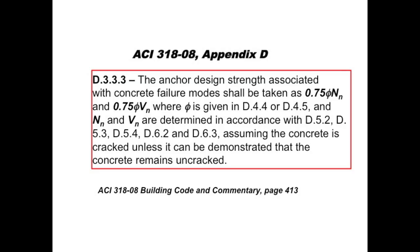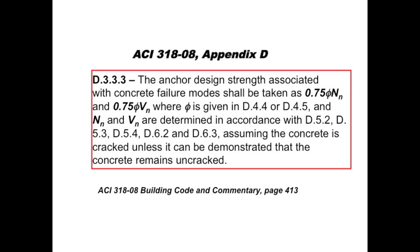Part D.3.3.3.3 states that a factor of 0.75 will be applied to design tension strengths and design shear strengths. PROFIS Anchor will apply a factor of 0.75 to all non-steel design strengths, including bond strength, when seismic design is selected as an option. The 0.75 factor will be designated by PROFIS Anchor as phi seismic. Note that phi seismic is not applied to any design steel strength; however, phi seismic will be applied to all non-steel design strengths such as concrete breakout.